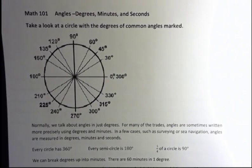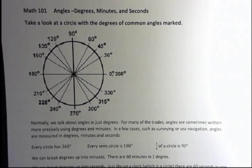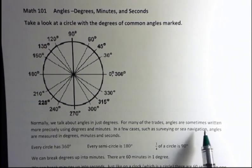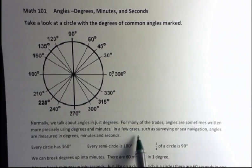Normally we talk about degrees when talking about angles. But for many of the trades, angles are sometimes written more precisely using degrees and minutes. And in a few cases, such as surveying or sea navigation, angles are measured in degrees, minutes and seconds.